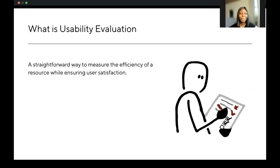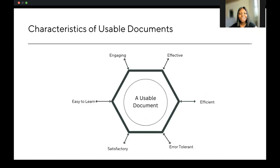Usability evaluation primarily focuses on how quickly and simply we can make the user's experience more pleasant while going through documentation — how easy it is to comprehend and apply the product documentation to meet their goals. We can determine if documentation is usable based on certain characteristics. First, look out for whether the documentation is easy to learn: the user should be able to successfully complete their goal without needing any external instructions or additional resources.